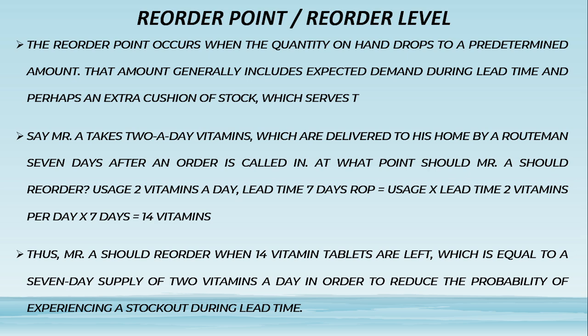At what time should Mr. A reorder? Usage: two vitamins a day. Lead time: seven days. ROP = usage × lead time = 2 vitamins per day × 7 days = 14 vitamins. Thus, Mr. A should reorder when 14 vitamin tablets are left, which equals a seven-day supply, in order to reduce the probability of experiencing a stockout during lead time.